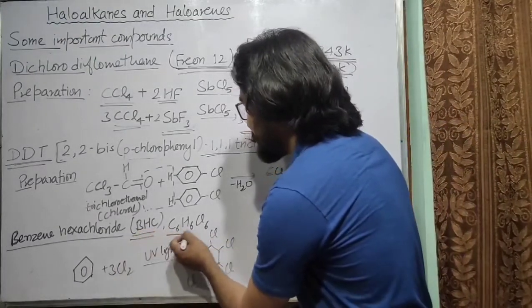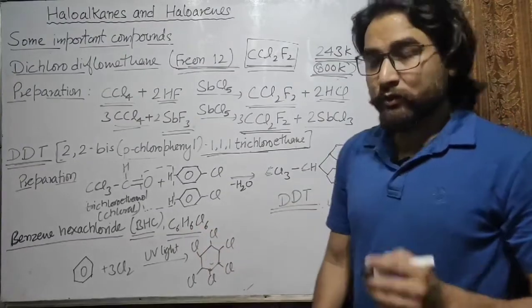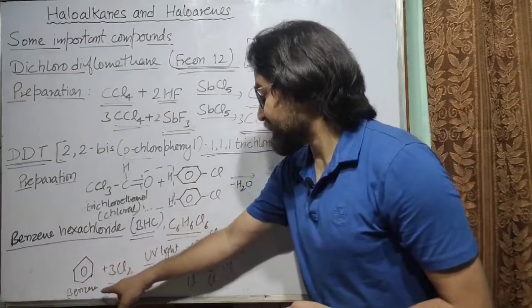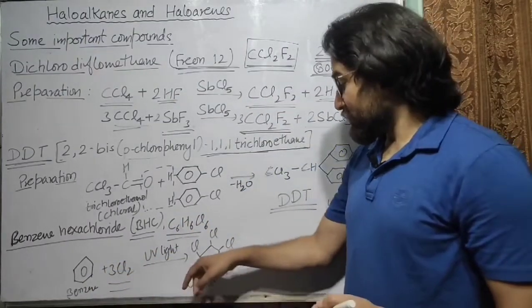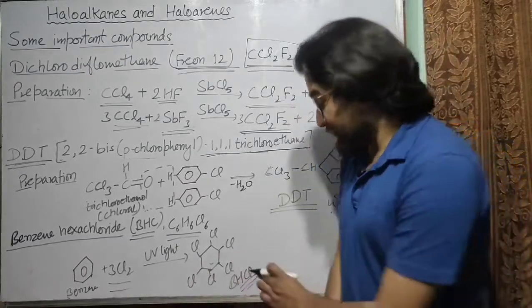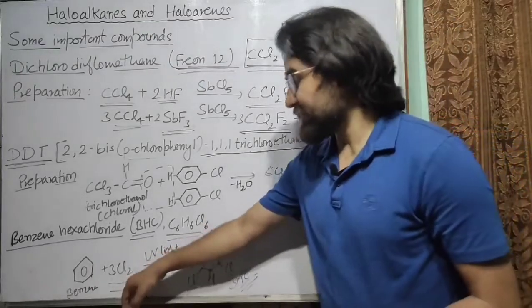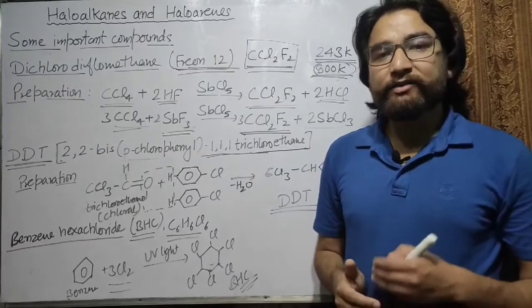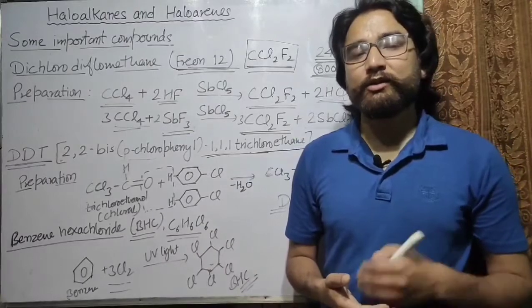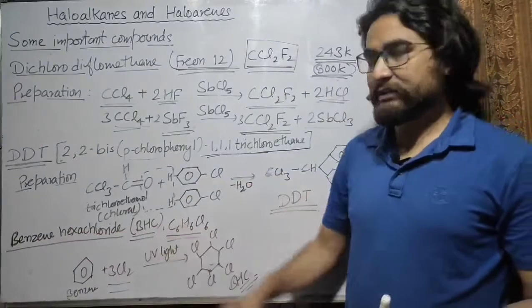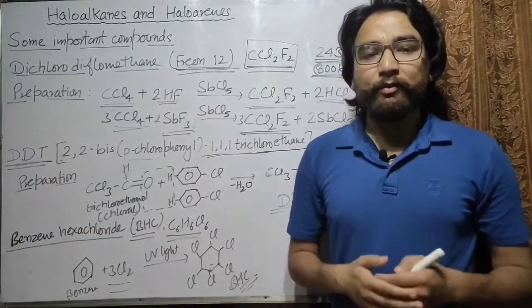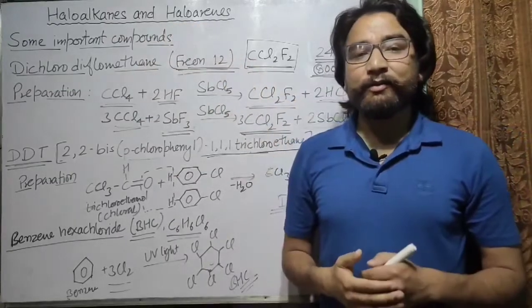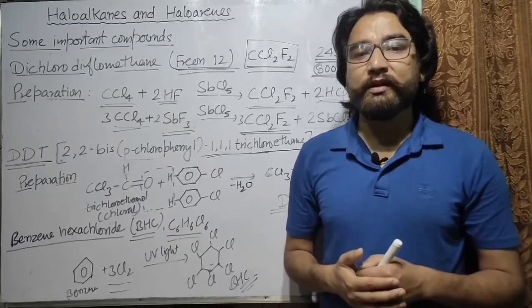The next compound is benzene hexachloride, commonly known as BHC, with formula C6H6Cl6. BHC can be prepared by the direct addition reaction of benzene with chlorine under ultraviolet light. It is also used as an insecticide for many insects like flies and mosquitoes. This concludes the chapter on haloalkanes and haloarenes. If you have any queries, you can ask in the comment box. Thank you very much.